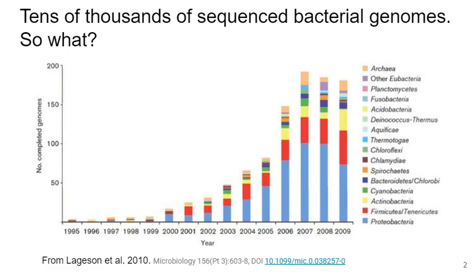In the last couple of decades, the advent of high-throughput next-generation sequencing has led to the production of literally tens of thousands of sequenced bacterial genomes, completed to varying degrees of assembly. Not all of them, of course, are finished and curated, and a lot of them are draft, but there are a lot of genomes out there.